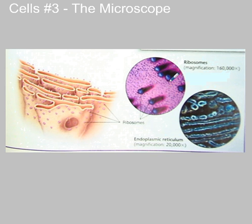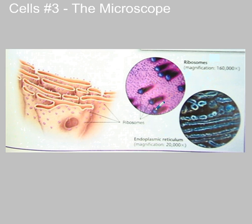These are ribosomes, which are the smallest of the organelles. Here's some endoplasmic reticulum. Look at the magnifications here — 20,000 times, 160,000 times magnification. Way more than you can get with a light microscope. Let's recall that ribosomes are where proteins are made inside the cell, and the endoplasmic reticulum are passageways for moving things like proteins around.